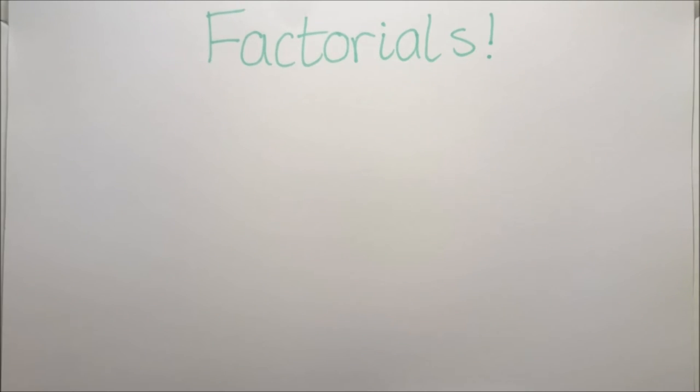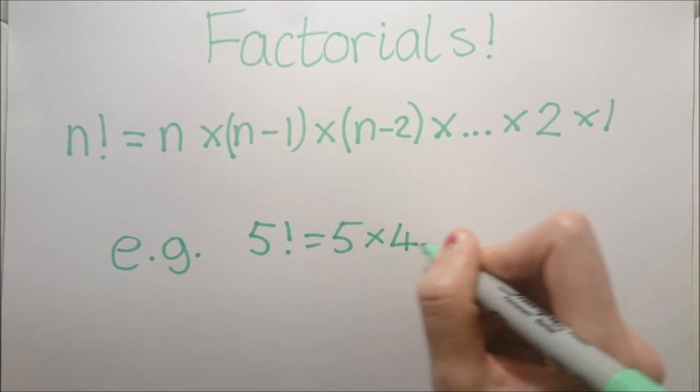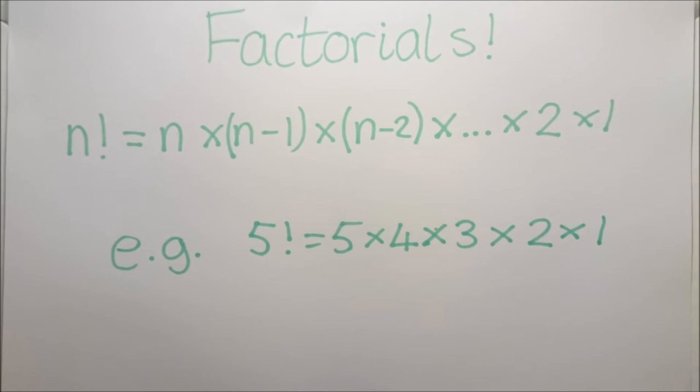Factorials. This is when we multiply the number n by every natural number below it. For example 5 factorial equals 5 times 4 times 3 times 2 times 1.